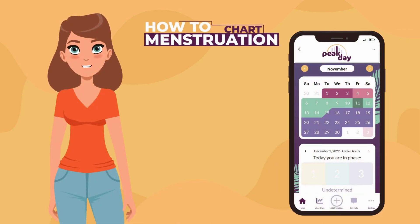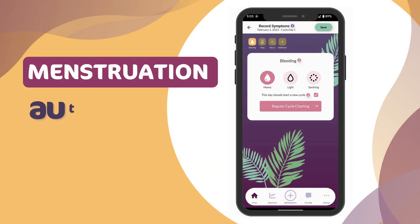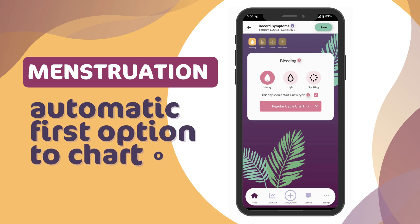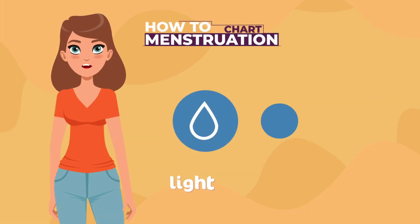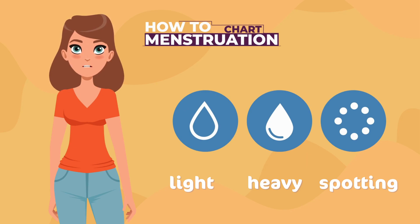Let's begin with menstruation and charting your period in Peak Day. You have clicked a new day on the calendar and it will automatically take you to menstruation. To chart your period, select the bleeding icon and then select light, heavy, or spotting. If you are not menstruating, don't choose anything.